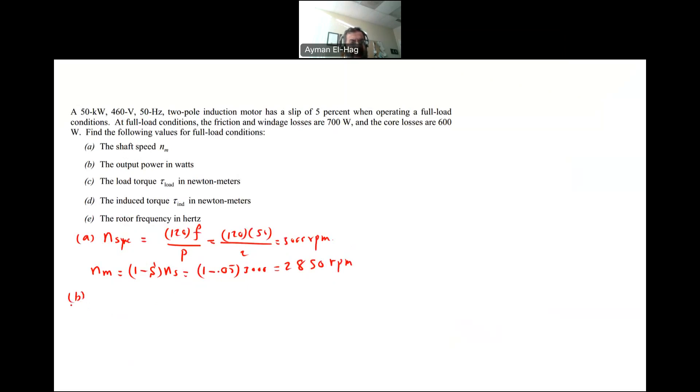In part B, it says the output power in watts, which is already given to you. This is the output power, the nameplate. This is your P out in kilowatt or in watt is equal to 50 kilowatt.